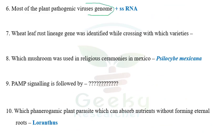The next question: most plant pathogenic viruses have a genome of positive single-stranded RNA. Nearly 78% of plant viruses have positive single-stranded RNA genomes. The next question is about the wheat leaf rust lineage gene identified by crossing with which varieties. I don't remember the answer, which is why I haven't mentioned it. If you know the answer, just comment below.